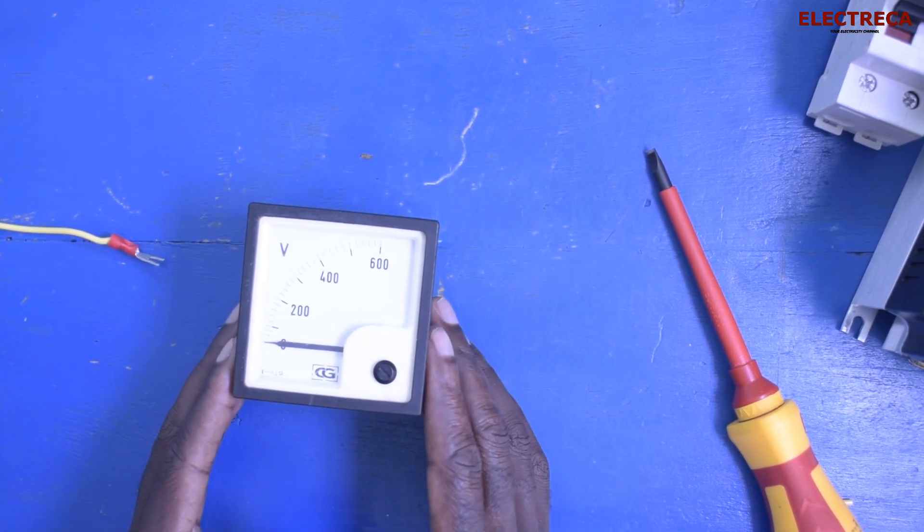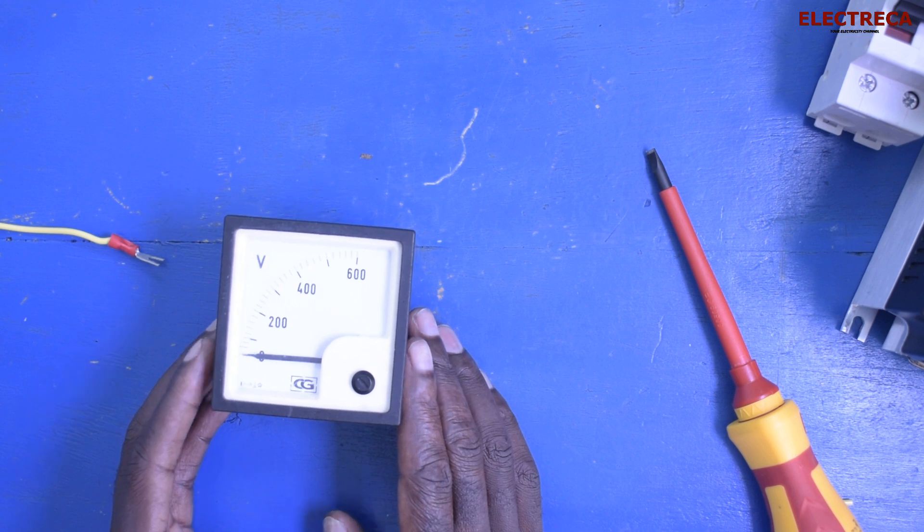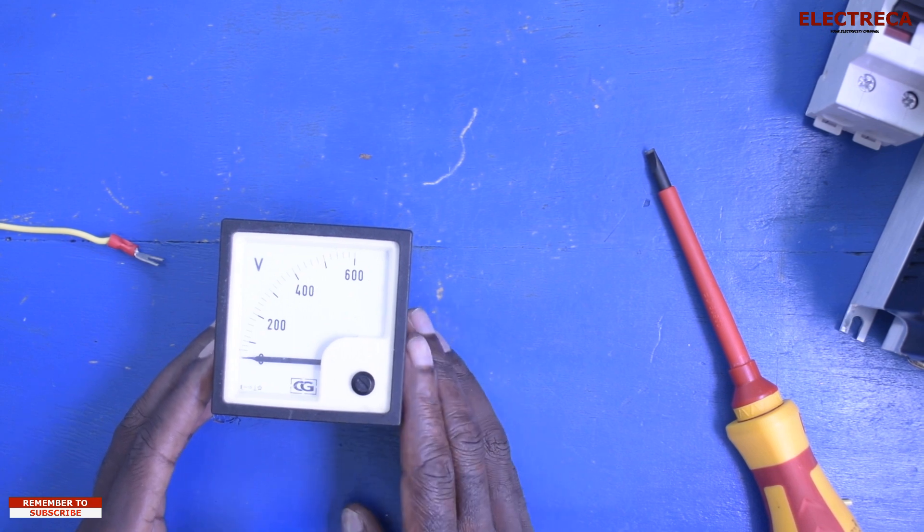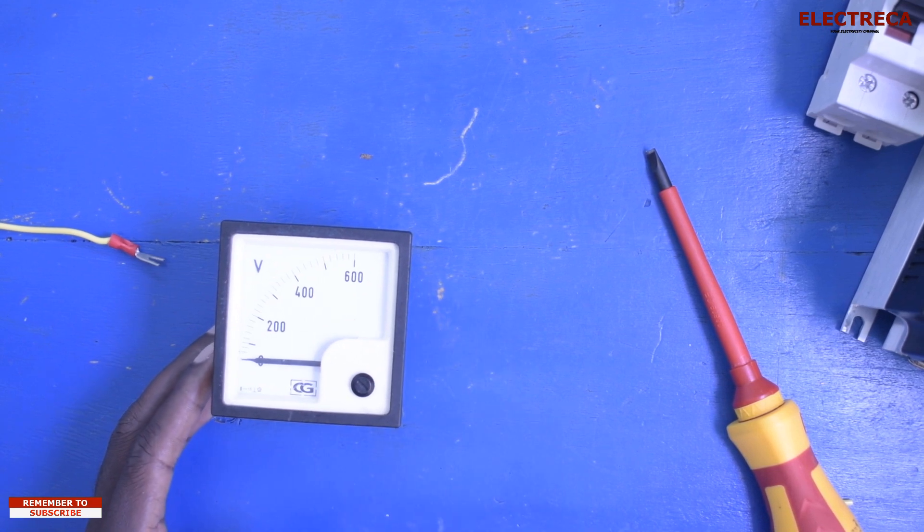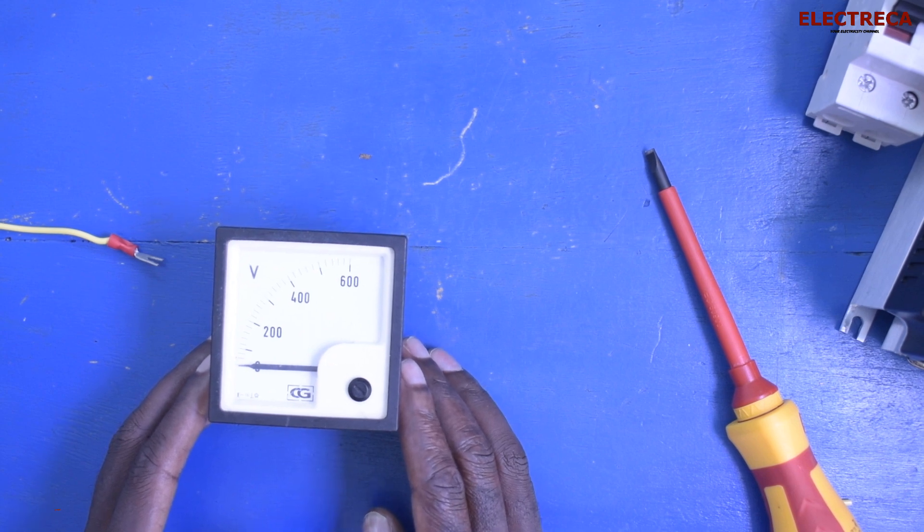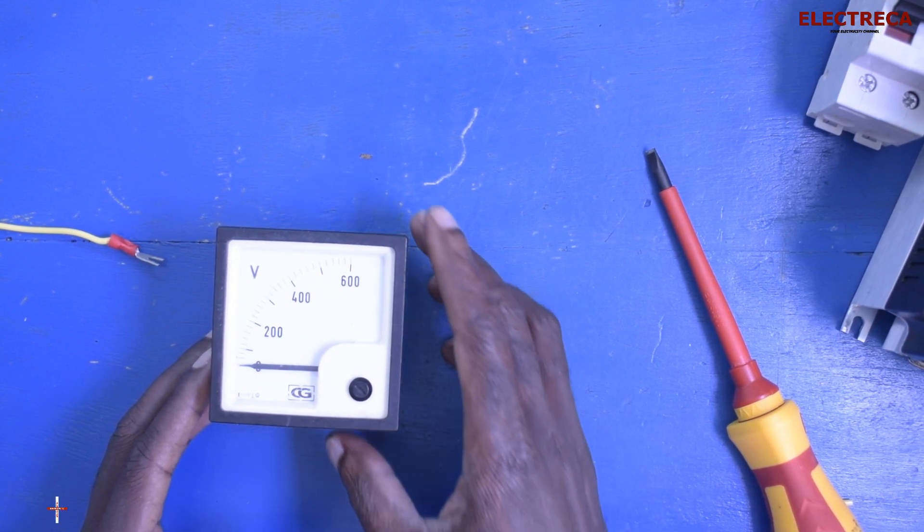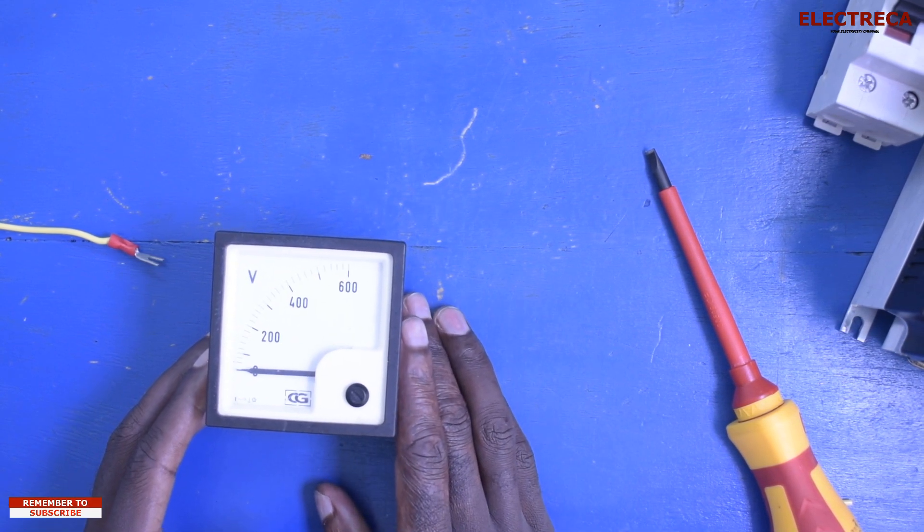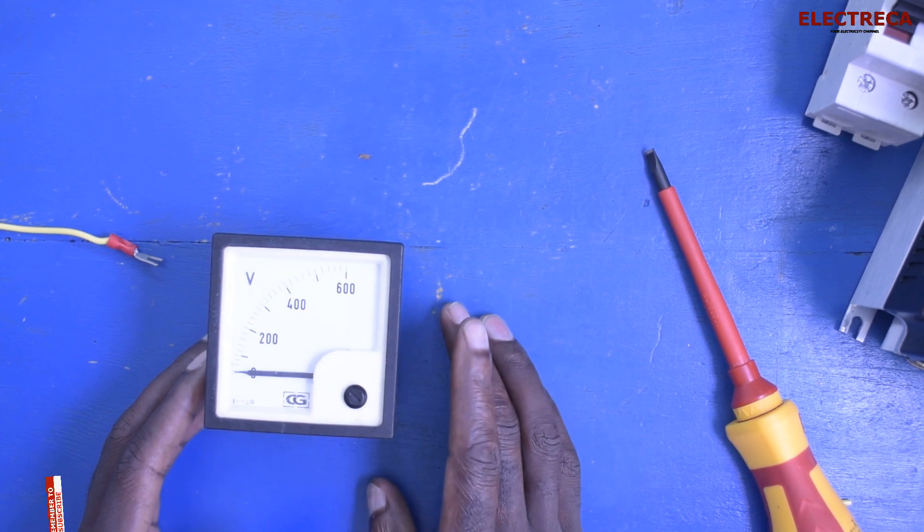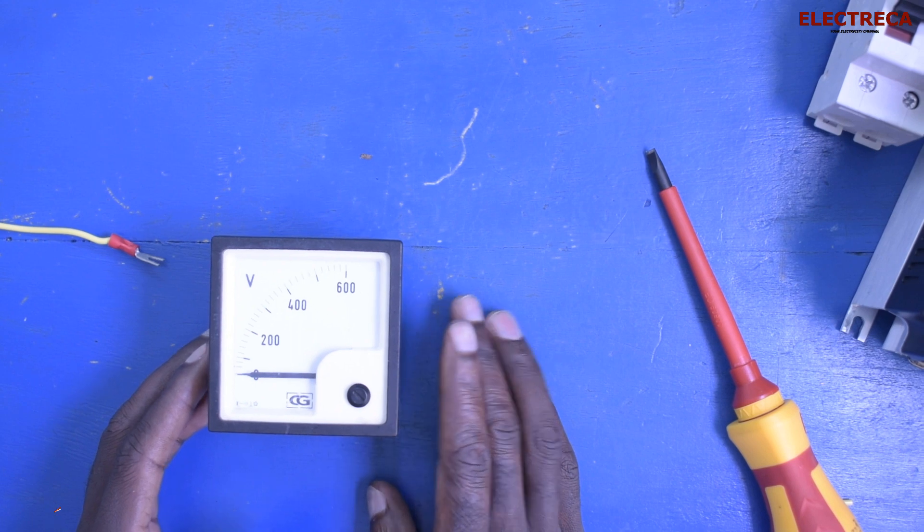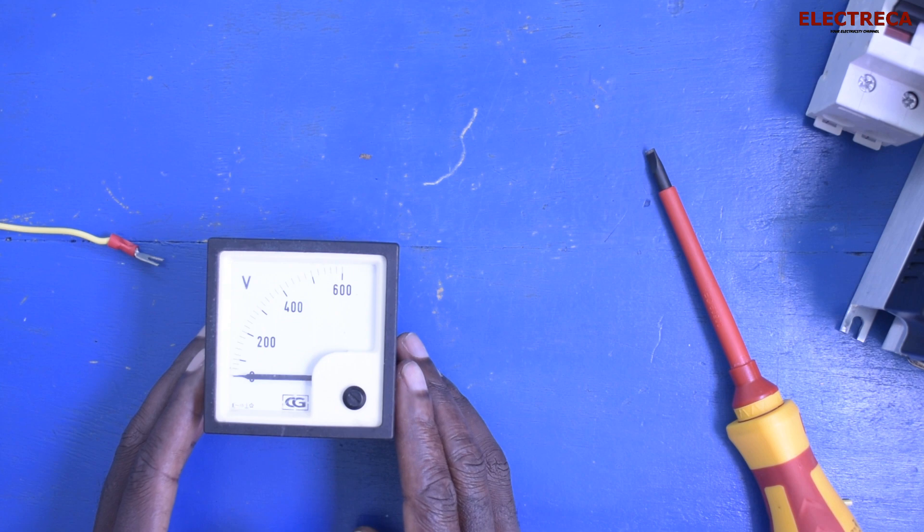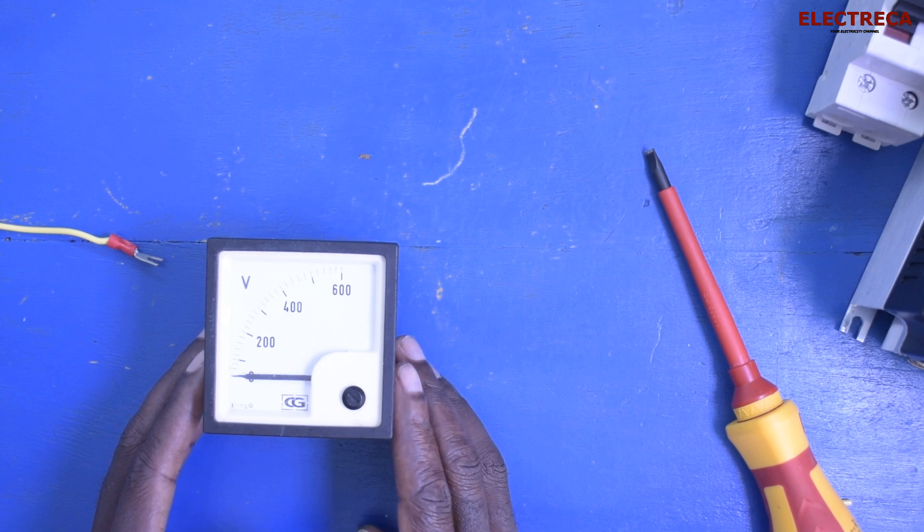The voltmeter is really essential in that it is able to tell you the availability of the voltage and also how much voltage you have. For instance, you might be experiencing under voltage, especially if you don't have protection. So probably your stuffs will be connected but lights are dim, maybe motor speed is low.